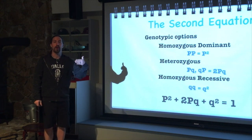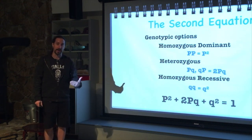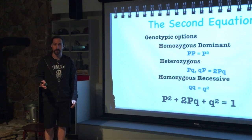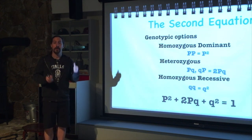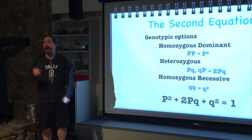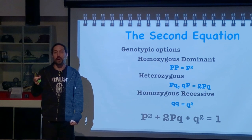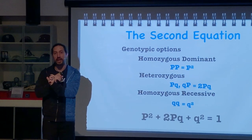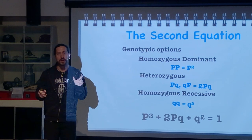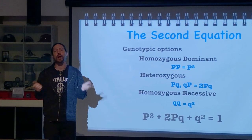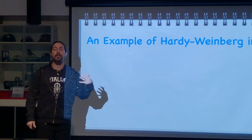So we have two equations: p plus q equals one (the frequency of all dominant alleles plus all recessive alleles equals one), and p squared plus 2pq plus q squared equals one (the frequency of homozygous dominant, plus heterozygous, plus homozygous recessive equals one). Now let's look at how we use this.